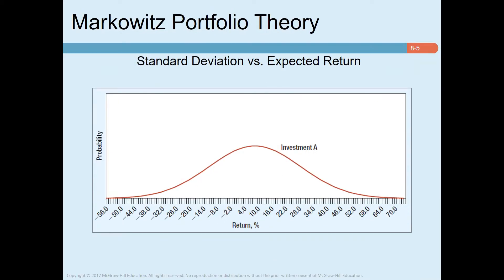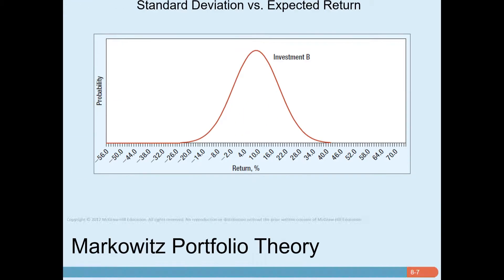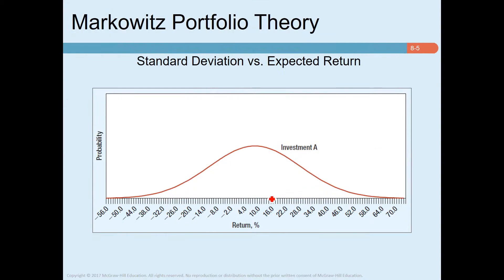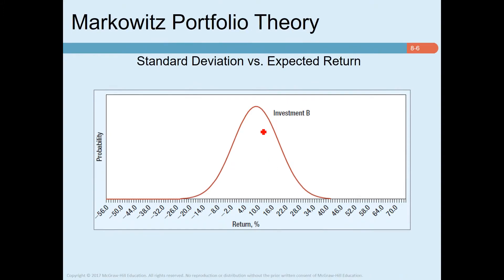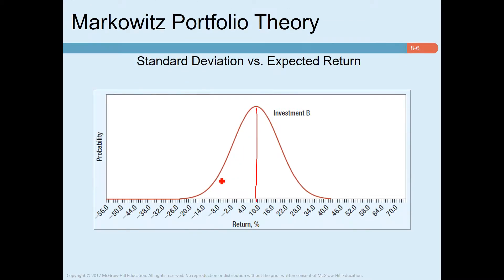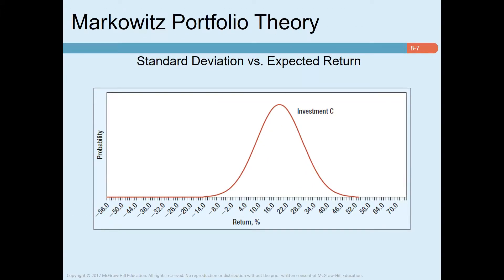Consider the possible returns from three investments: A, B, and C. Investment A and Investment B both provide an expected return of 10 percent; however, Investment A has a much wider spread compared to Investment B. Since both offer the same expected return but Investment B has a narrower spread, Investment B is less risky. Most investors would therefore prefer B over A.